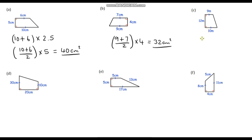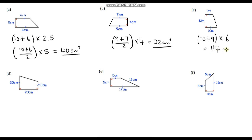Okay, this next one. We're going to add our parallel sides together: 10 plus 9. This time I'm going to multiply by half our height because when we halve 12 we still get an integer — half of 12 is 6. So 10 plus 9 is 19, and 19 times 6: 20 times 6 is 120, take away 6 is 114. And be really careful — that is not in centimetres squared, it is metres squared.